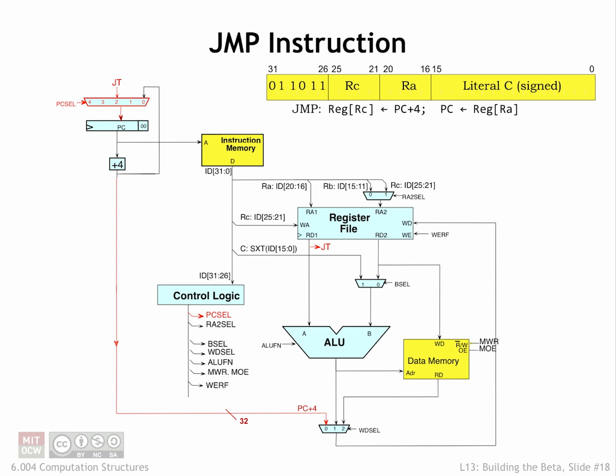The jump instruction simply takes the value in the RA register and makes it the next PC value. The PC cell box in the upper left-hand corner lets the control logic select the source of the next PC value.